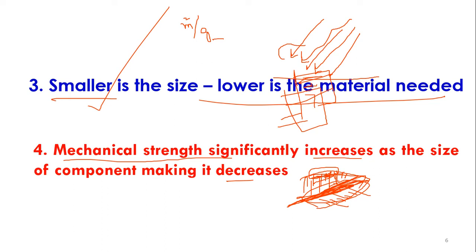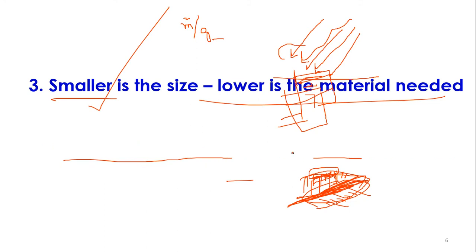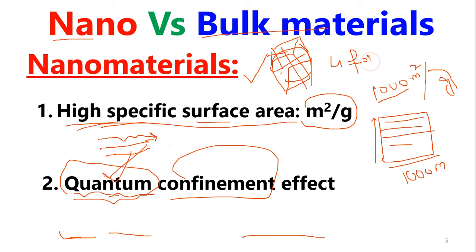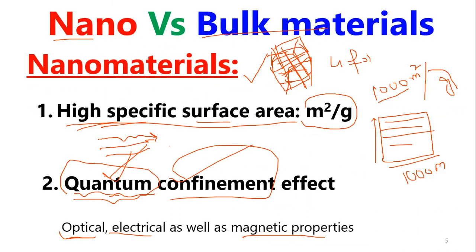This covers the differences between nano and bulk materials. For bulk material: it has a low specific surface area — as illustrated by a cube, breaking it into smaller pieces increases surface area. There is also no quantum confinement effect in bulk, so you cannot tune the optical, electrical, or magnetic properties to get desired results in applications.